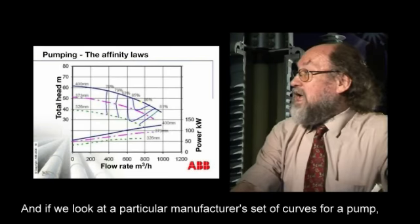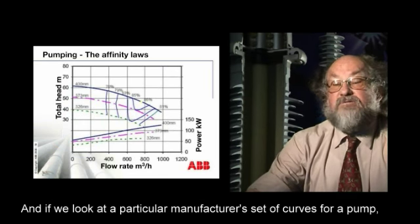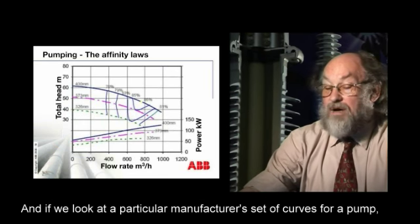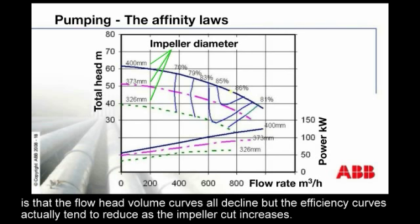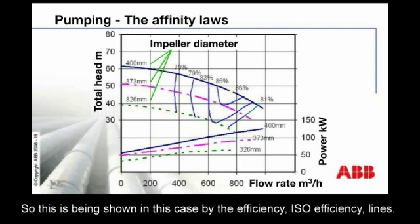If we look at a particular manufacturer's set of curves for a pump, these are plotted first with the impeller diameter reducing — this is described as a cut impeller. The important point is that the flow-head-volume curves all decline, but the efficiency curves actually tend to reduce as the impeller cut increases. This is shown by the isoefficiency lines.